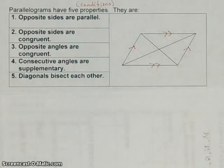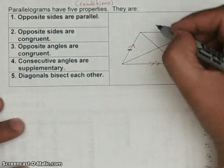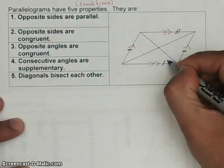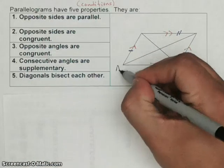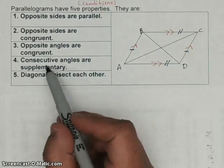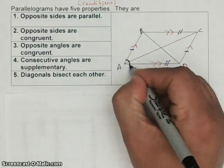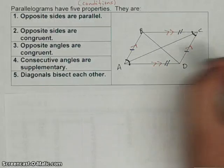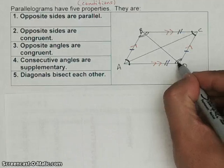The top and bottom sides are also congruent to each other. Consecutive angles are supplementary. Let's label this parallelogram A, B, C, D. Opposite angles are congruent, so angle A would be congruent to the angle across from it, and angle ABC would be congruent to angle ADC.